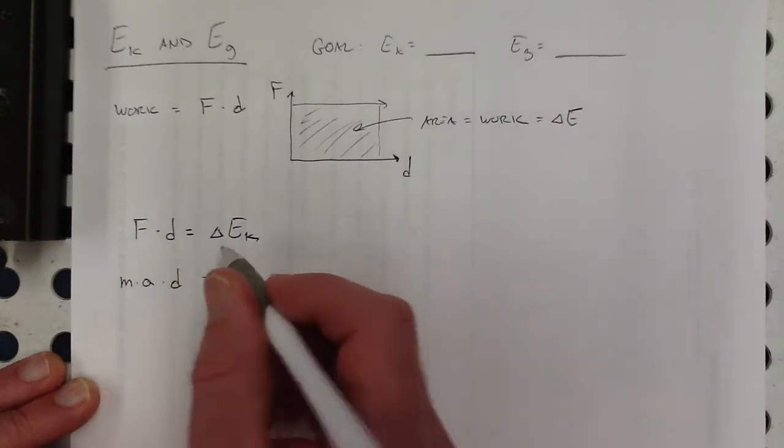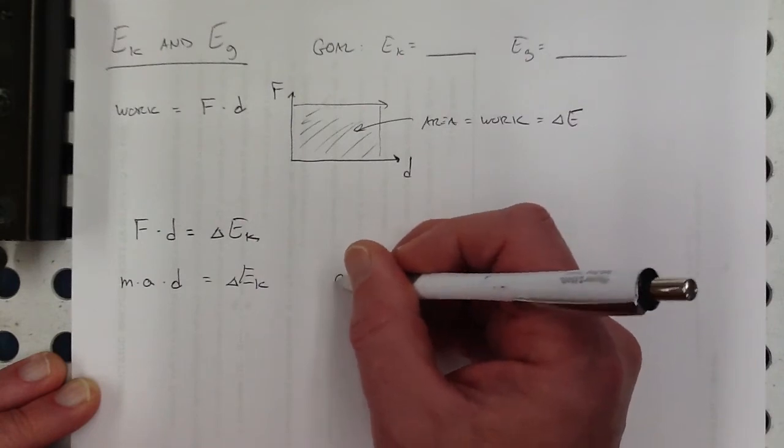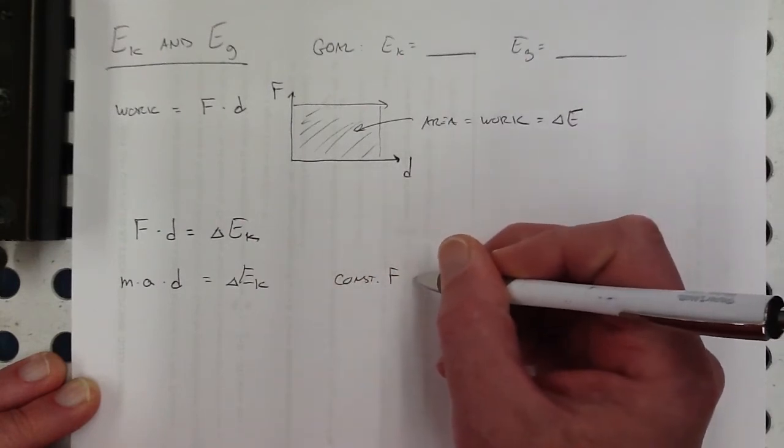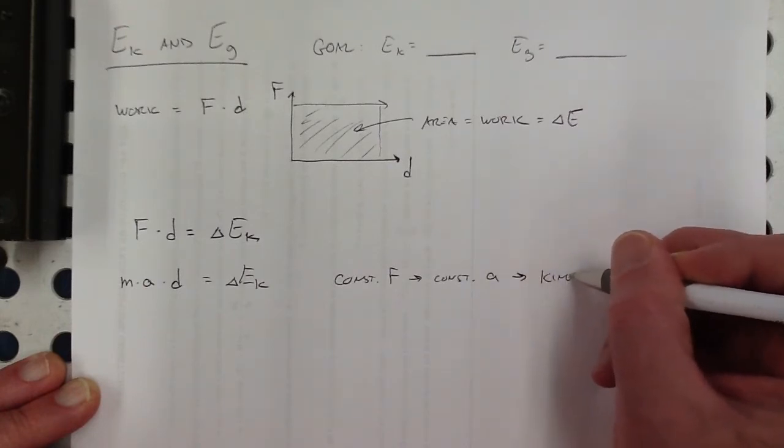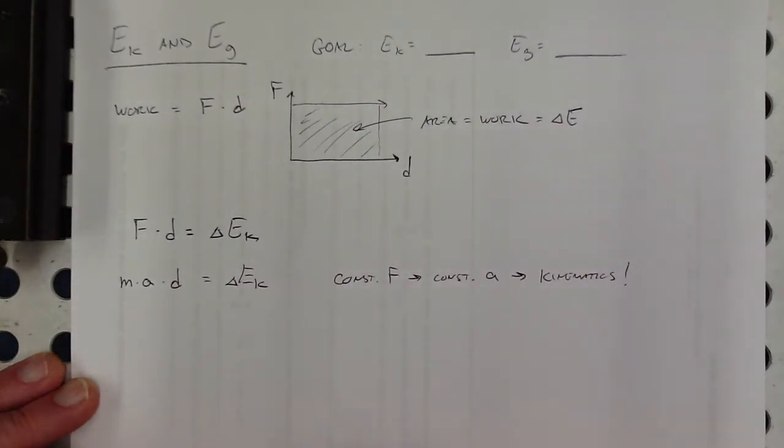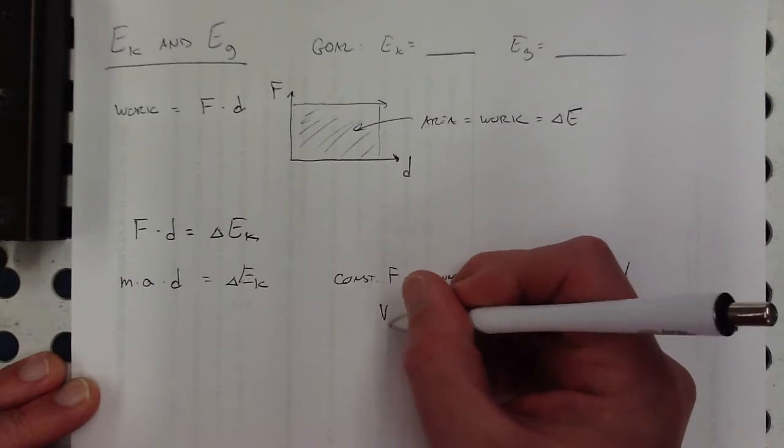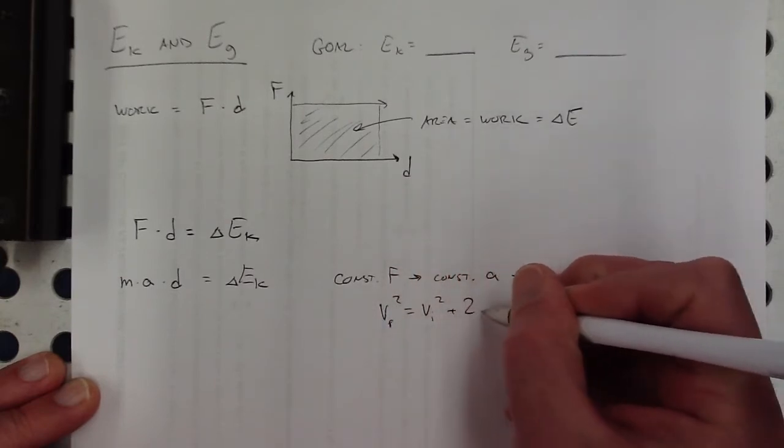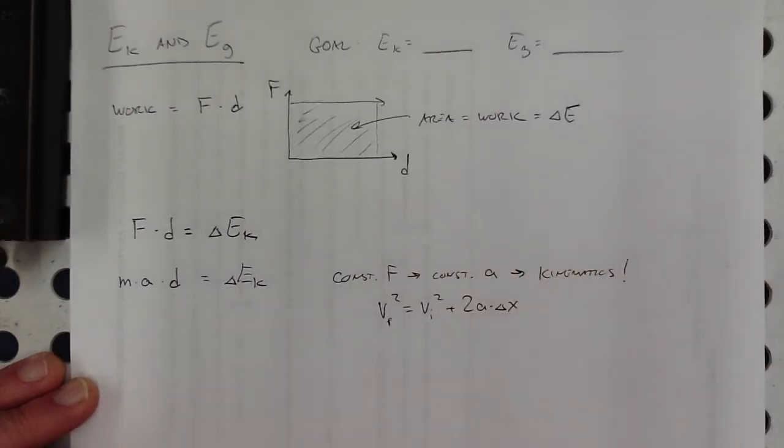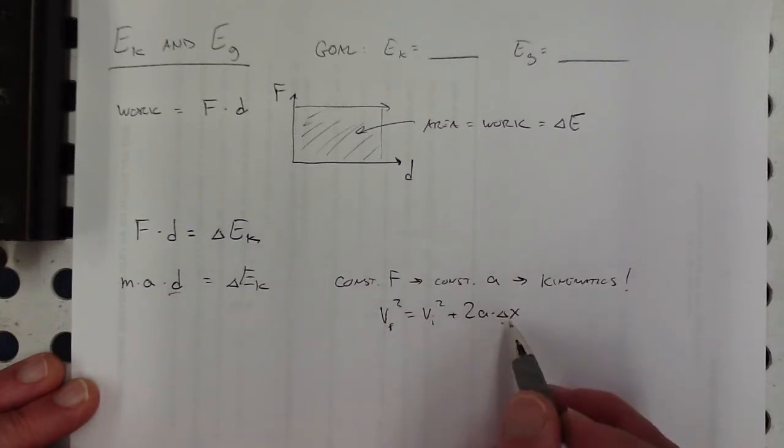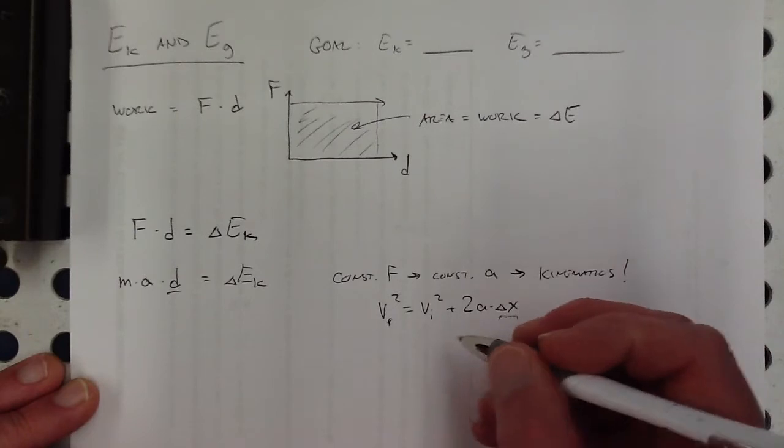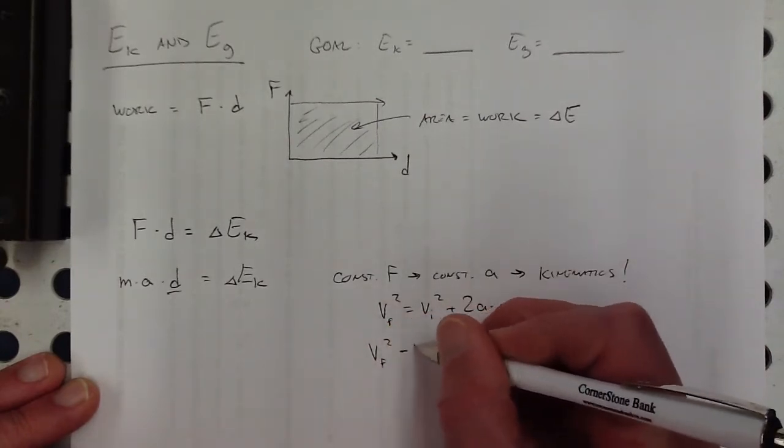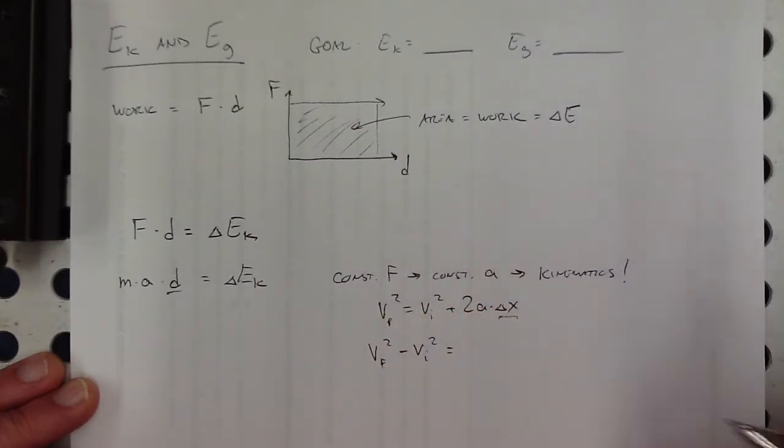And if it is a constant force, then that means that we have constant acceleration. And that means we can use kinematics equations. And one of the kinematics equations that we know is that v_f squared is equal to v_i squared plus 2a times delta x. And the delta x and the distance here, that's just two ways of describing the same thing, like some distance that it's moved through. So I'm going to go ahead and replace this in my next line. I'm going to do a couple of things here. Some basic algebra.